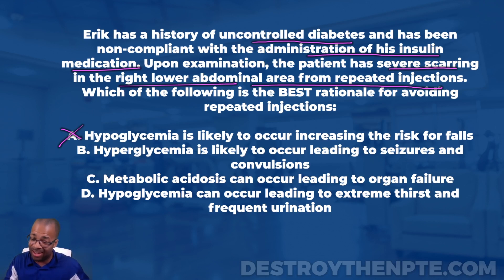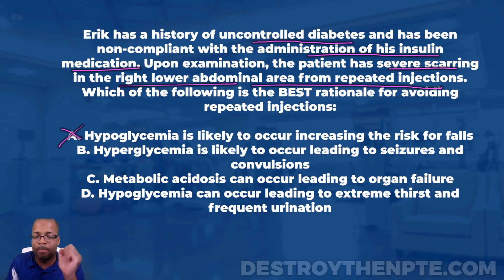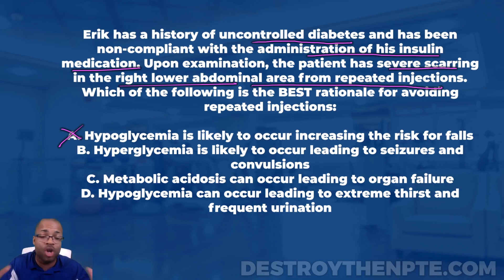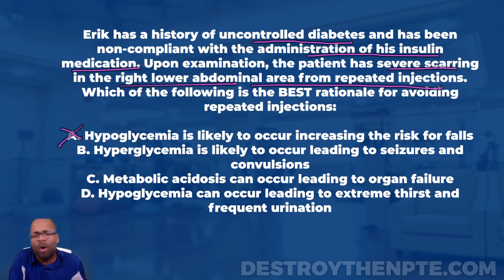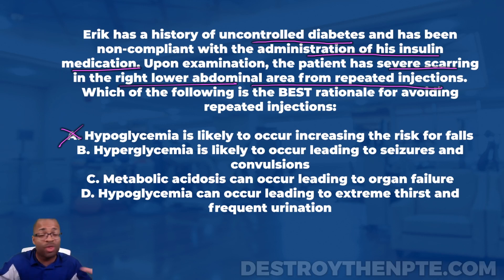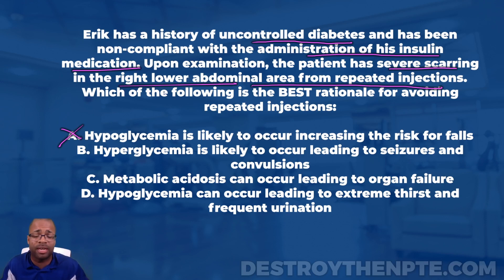Answer B says hyperglycemia — I like that part. But the rest says it's likely to lead to seizures and convulsions. Does hyperglycemia likely lead to seizures and convulsions? No. Seizures, convulsions, and coma are more likely seen with hypoglycemia. Although hyperglycemia is the expected condition here, the consequences listed in B are incorrect. So B gets a big X.